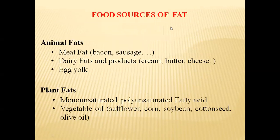Coming to the food sources of fats — we can get fats from both animal food and plant food. The fats present in animal food are called animal fats. Meat fat and dairy fats — dairy products like cream, butter, cheese, milk, and egg yolk — are the products that give fat from animal origin.